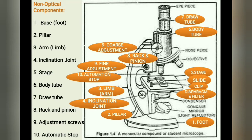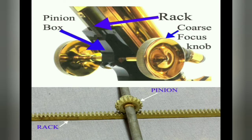The seventh part is the draw tube — a small tube that remains fixed at the upper end of the body tube. It holds the eyepiece or ocular lens. The next part is the rack and pinion. The microscope has a rack and pinion attached either to the body tube or the stage for bringing the object under focus. This shows the structure of the rack and pinion.